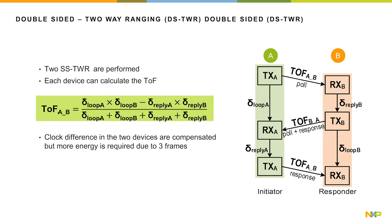In double-sided two-way ranging, basically two single-sided two-way ranging are performed. Each device can calculate the time of flight. The clock differences between the two devices are compensated, but somewhat more energy is required because more frames are sent.